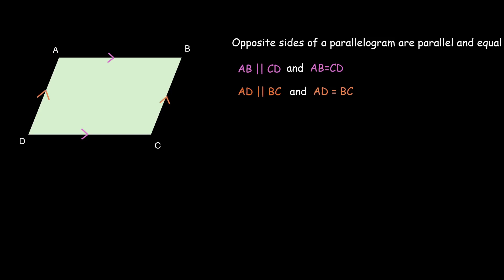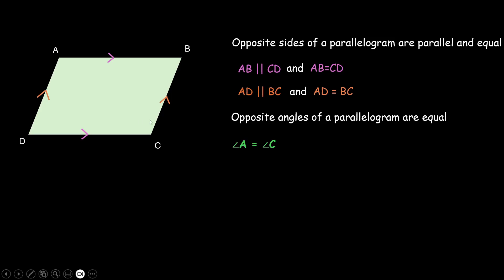Another property is opposite angles of a parallelogram are equal. So angle A is equal to angle C, and angle B is equal to angle D.